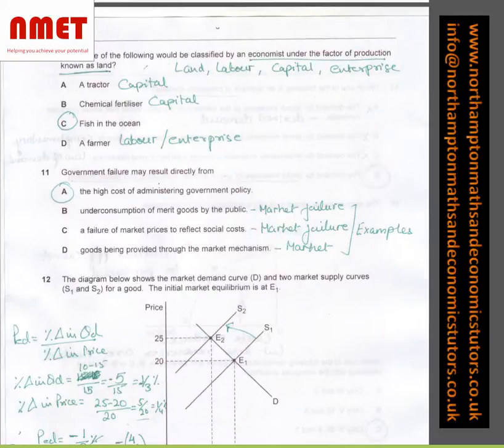In question number 10, which one of the following would be classified by an economist under the factors of production known as land? Fish in the ocean. What I've done is I've put down the four factors of production: land, labor, capital, enterprise. I've again used the process of elimination where I've said a tractor is capital, chemical fertilizer is again capital, and the farmer would be labor or you could say it's the enterprise. And C is the answer by using process of elimination.